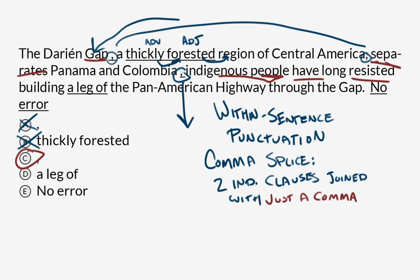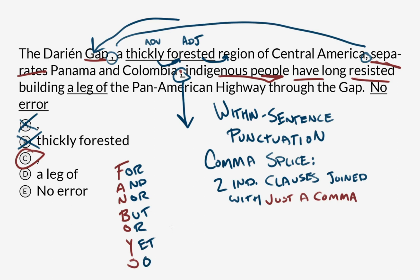One of the ways you could fix it — though you don't have to for this question — is to change this comma into a semicolon. Or you could keep the comma but add one of the FANBOYS conjunctions: for, and, nor, but, or, yet, so — also known as the coordinating conjunctions of English.